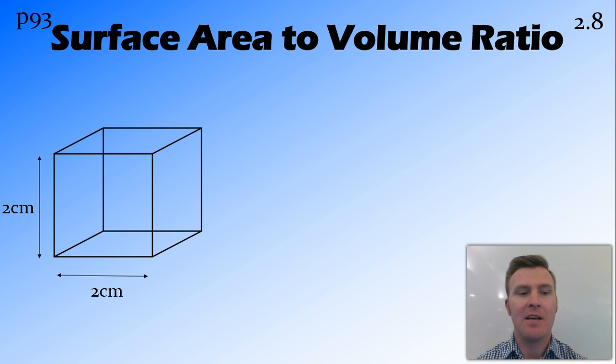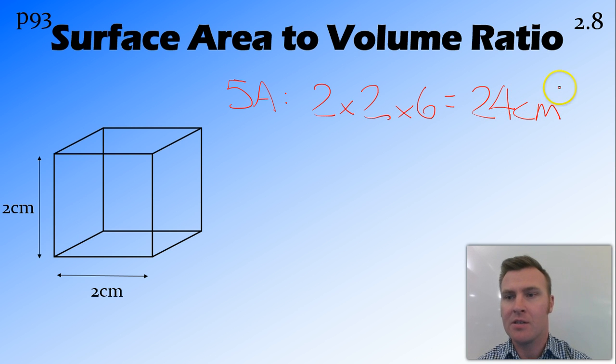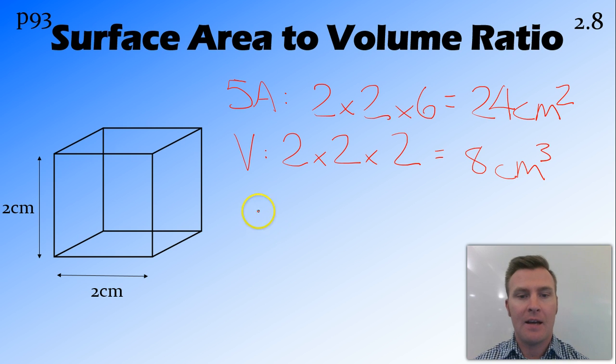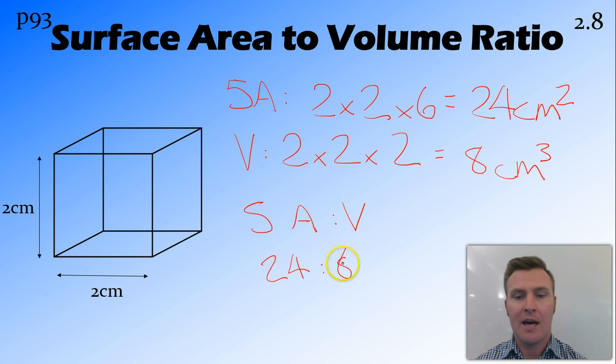Now we have a bigger cube. This time we've got a cube that is 2cm by 2cm. So to work out the surface area, it will be 2 times 2 times the 6 sides, giving us 24cm squared. To work out the volume, we times the height, 2, times the length, times the width, giving us 8cm cubed, making our surface area to volume ratio 24 to 8, or we can simplify that into 3 to 1.